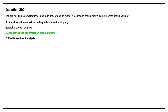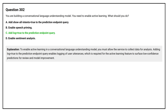The correct answer is Option C: Add 'log equals true' to the prediction endpoint query. To enable active learning in a conversational language understanding model, you must allow the service to collect data for analysis. Adding 'log equals true' to the prediction endpoint query enables logging of user utterances, which is required for the active learning feature to surface low-confidence predictions for review and model improvement.